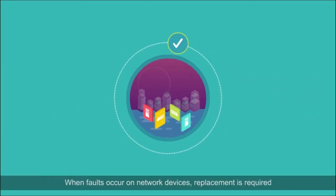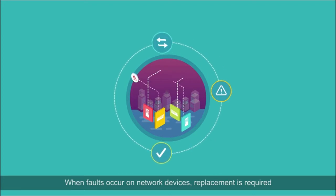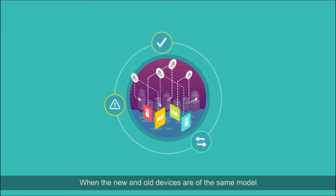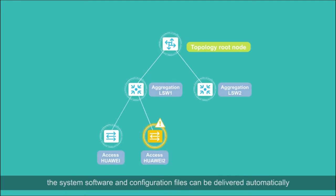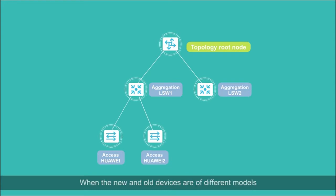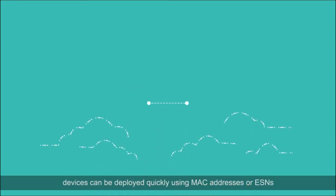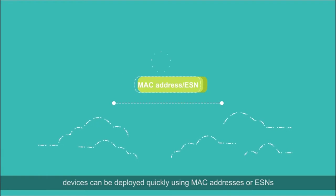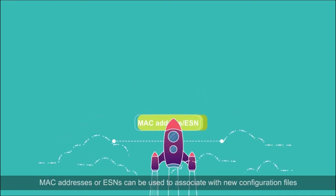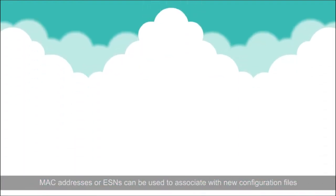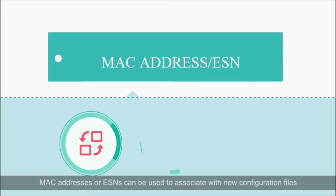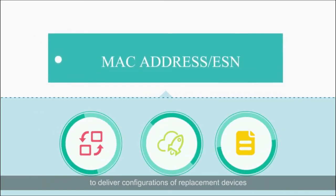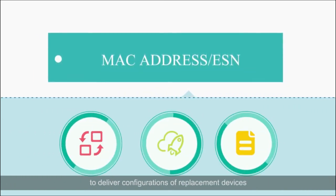When faults occur on network devices, replacement is required. When the new and old devices are of the same model, the system software and configuration files can be delivered automatically — that is, plug and play. When the new and old devices are of different models, devices can be deployed quickly using MAC addresses or ESNs. MAC addresses or ESNs can be used to associate with new configuration files to deliver configurations of replacement devices.